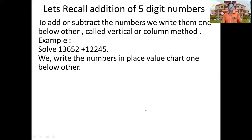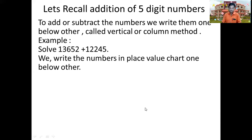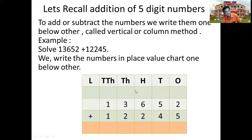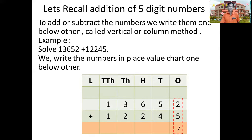We have the example of adding 13,652 with 12,245. For that we are going to write the numbers in the place value chart. We start the addition from the smallest place, that is the ones place. We add 2 and 5 in the ones place: 2 plus 5 gives us 6 at the ones place.